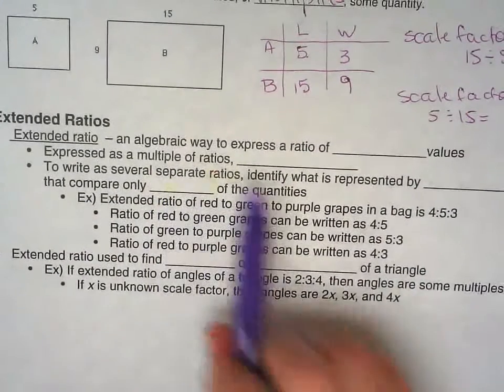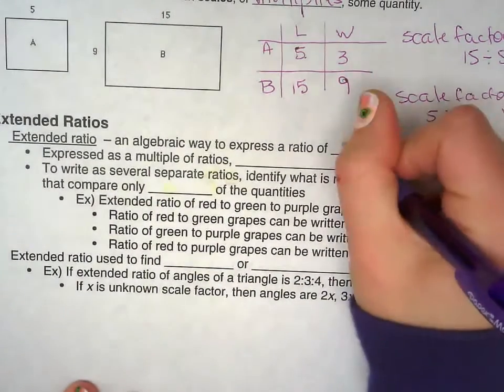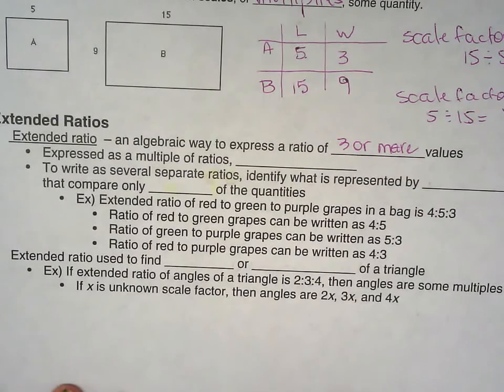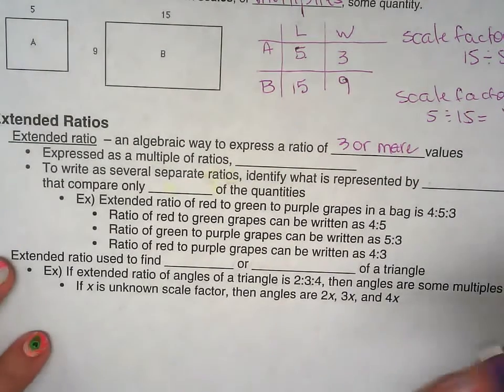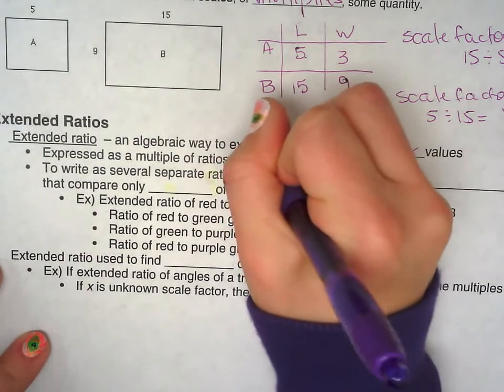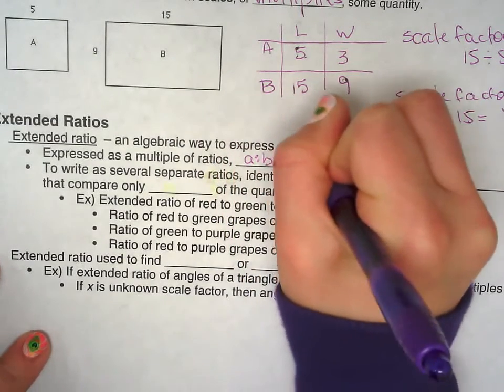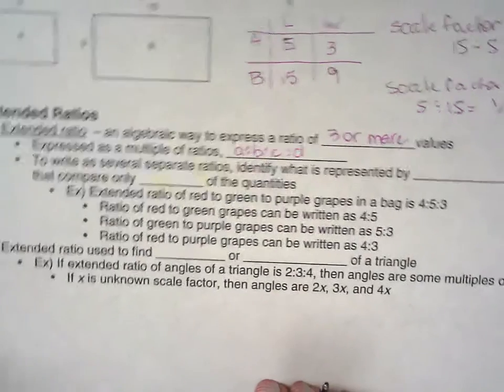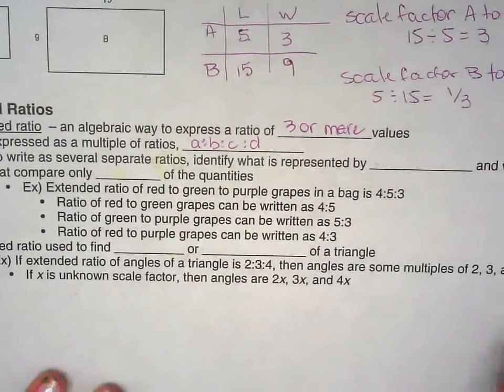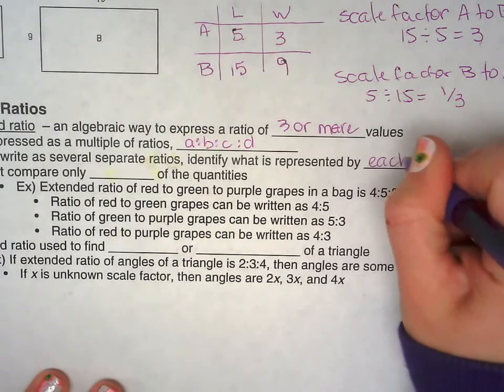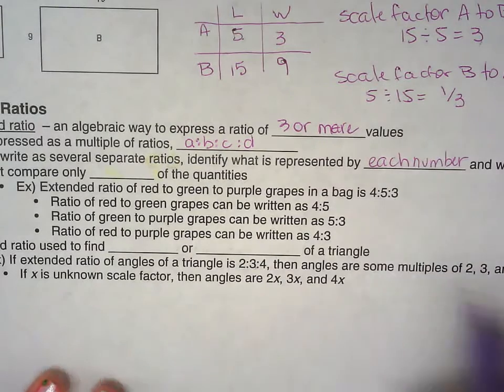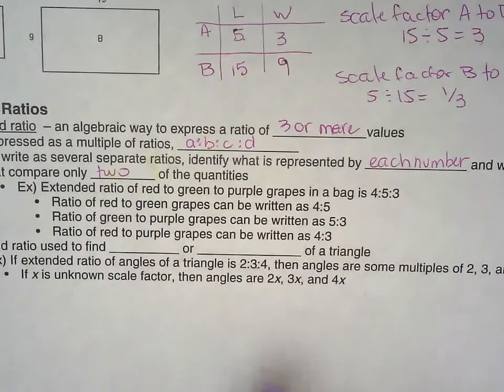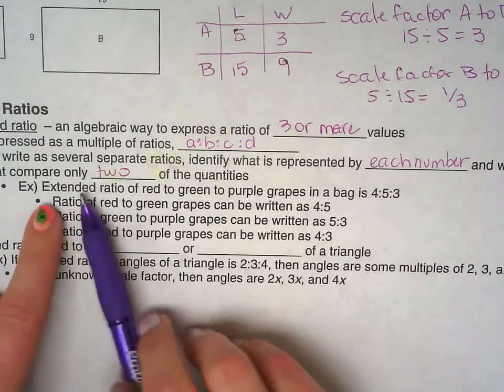Extended ratios in a direct way to express ratios of three or more values can be expressed as multiples of ratios. So A to B to C to D. We're going to work some examples over that, the extended ratios. So to write several separate ratios, identify what is represented by each number. And then you write the ratios that compare only two of the quantities. So you're only doing two at a time. You're not doing anything different.